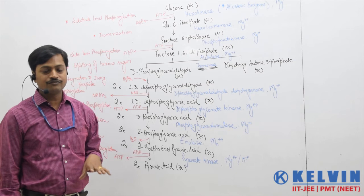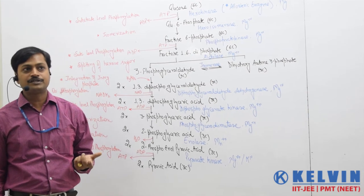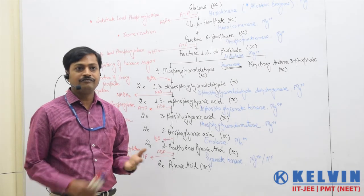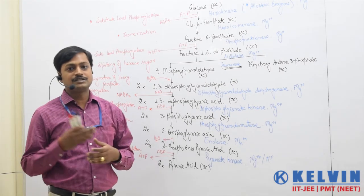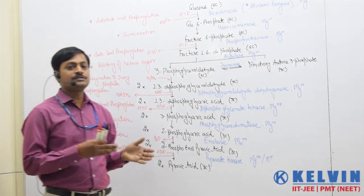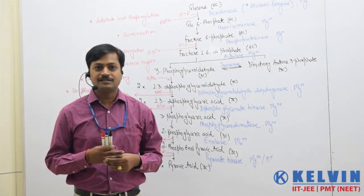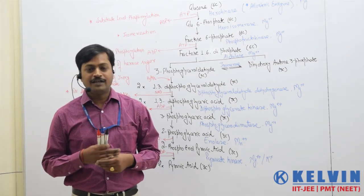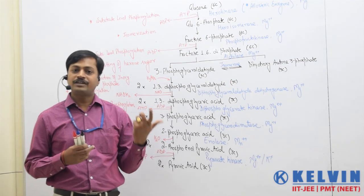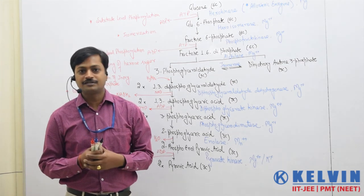We have two molecules of pyruvic acid and two molecules of NADH₂ formed, which serve as energy carriers. If glycolysis proceeds to aerobic respiration, those NADH₂ molecules form six ATP during ETS. If it is anaerobic respiration, we have just two ATP molecules formed during glycolysis.